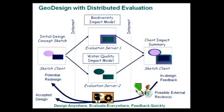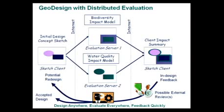Rather than consider this as a pipeline flowing just one way once, we really concentrated on the bottom half of the diagram in terms of in-design feedback, the possibility for external reviews, the thought process that the designer is going through when laying down a single polygon or doing a policy decision, and essentially using as a metric the cycle time — how many times can you get through this and get valuable, useful feedback? The mantra was: design anywhere, evaluate everywhere, feedback quickly.